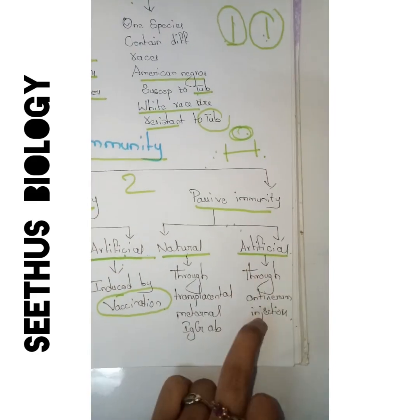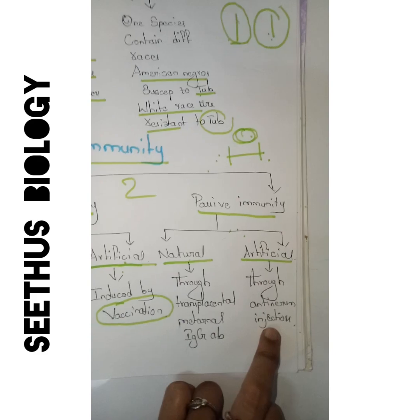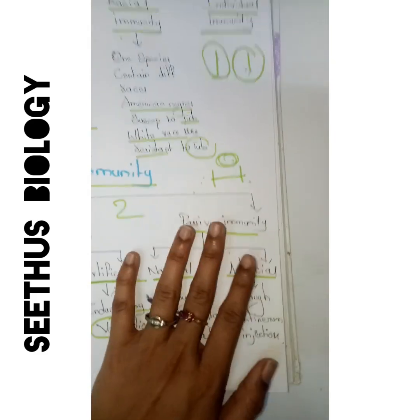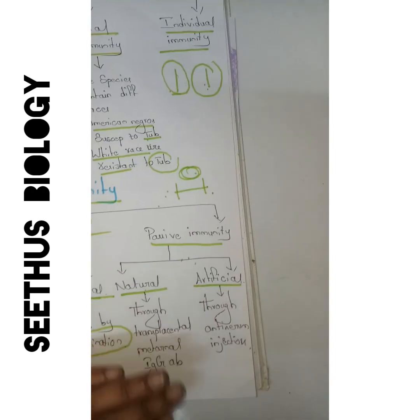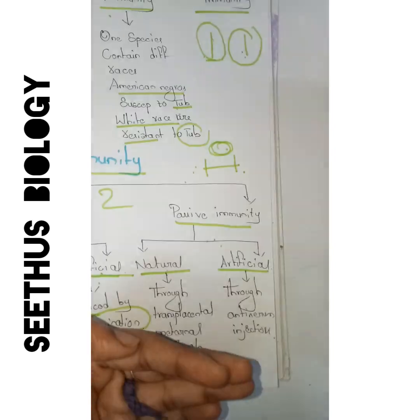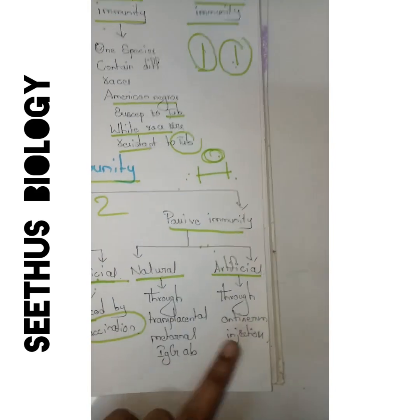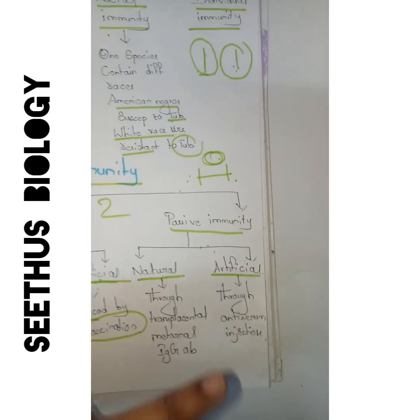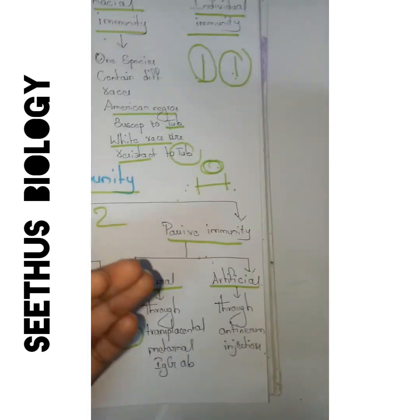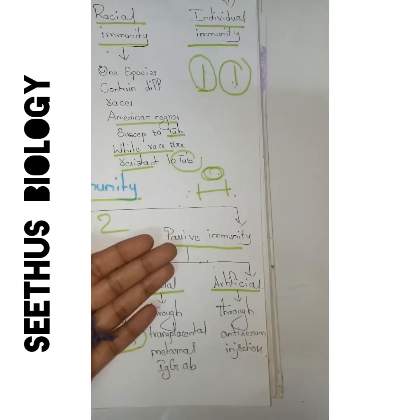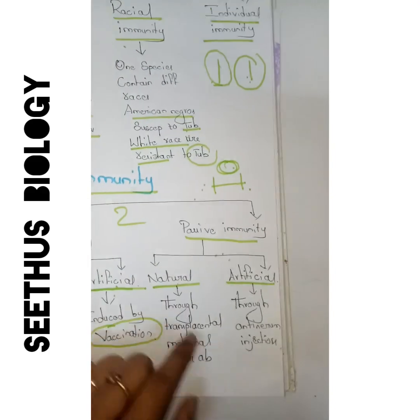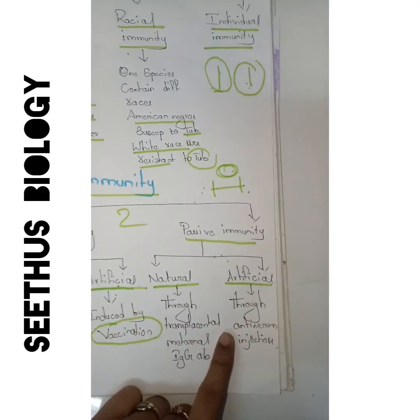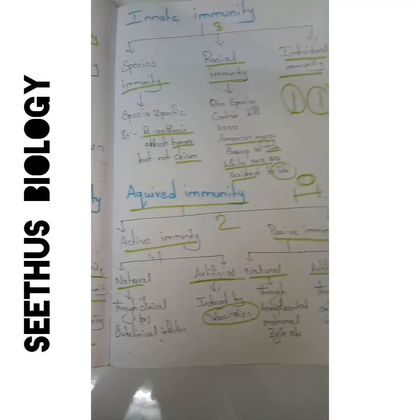Artificial passive immunity works through antiserum injections. If we are suffering from any infection, we inject antiserum — which contains antibodies against the infection — directly into the body. These antibodies fight against the antigen and kill it. This is how passive artificial immunity works.